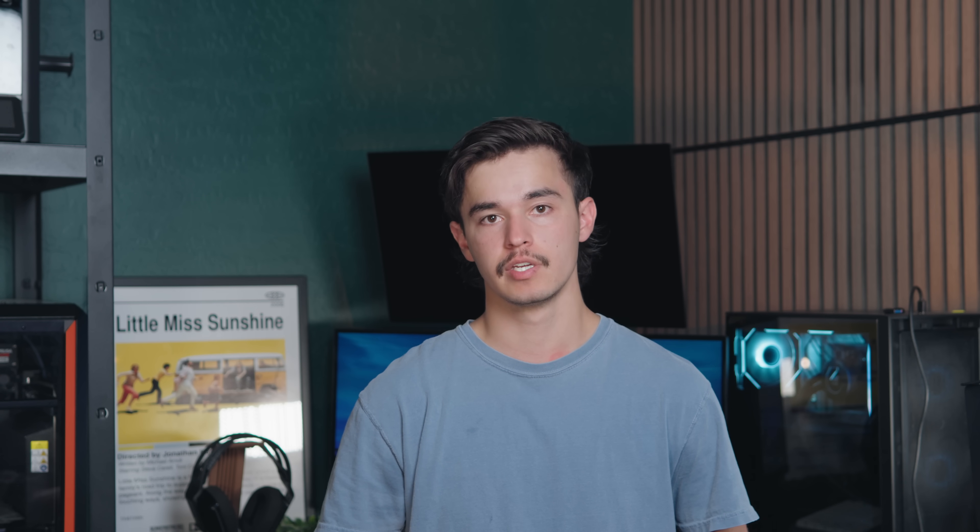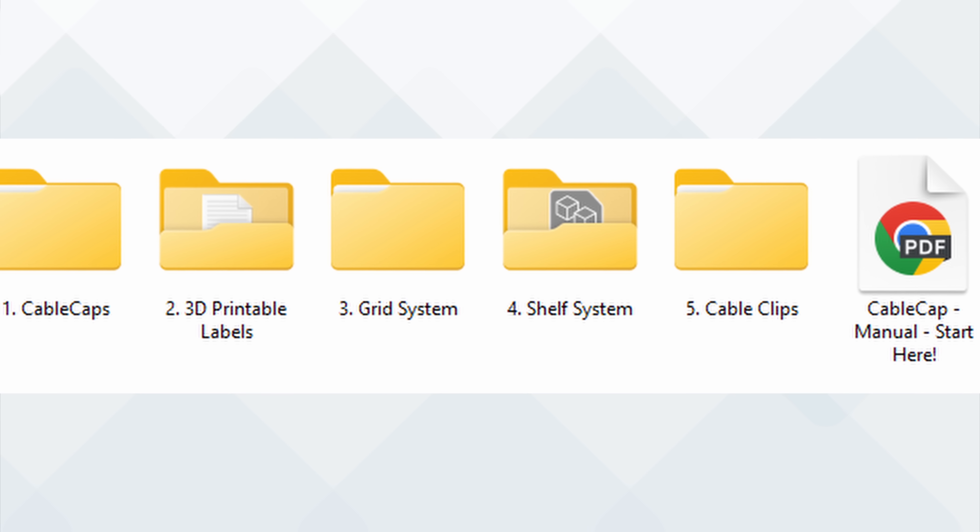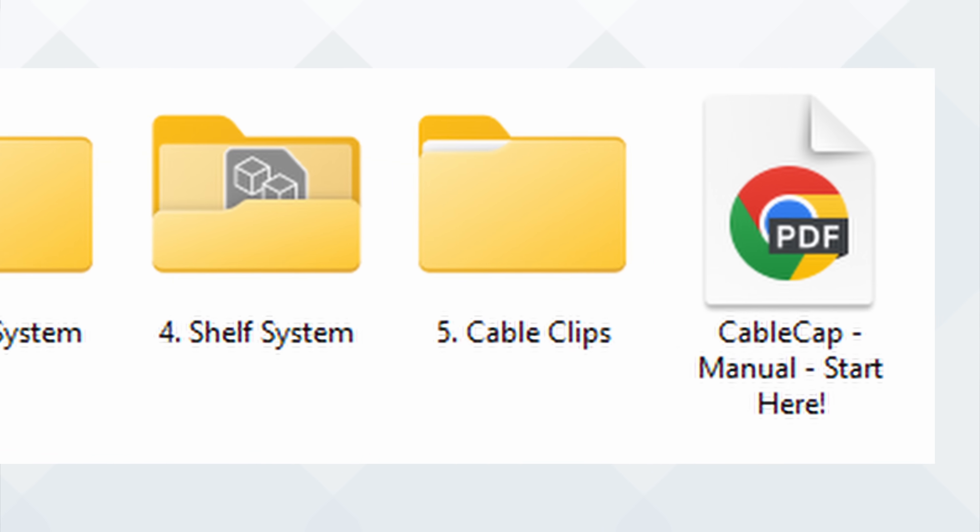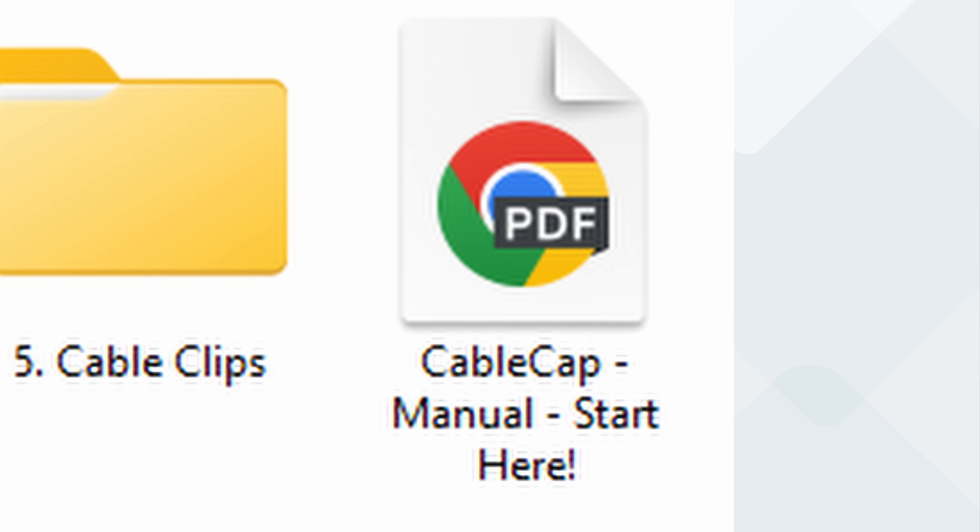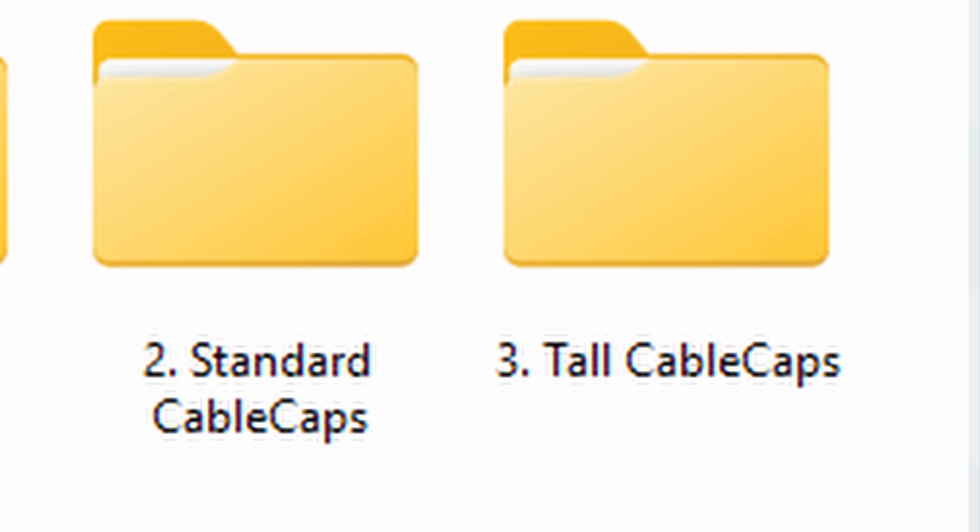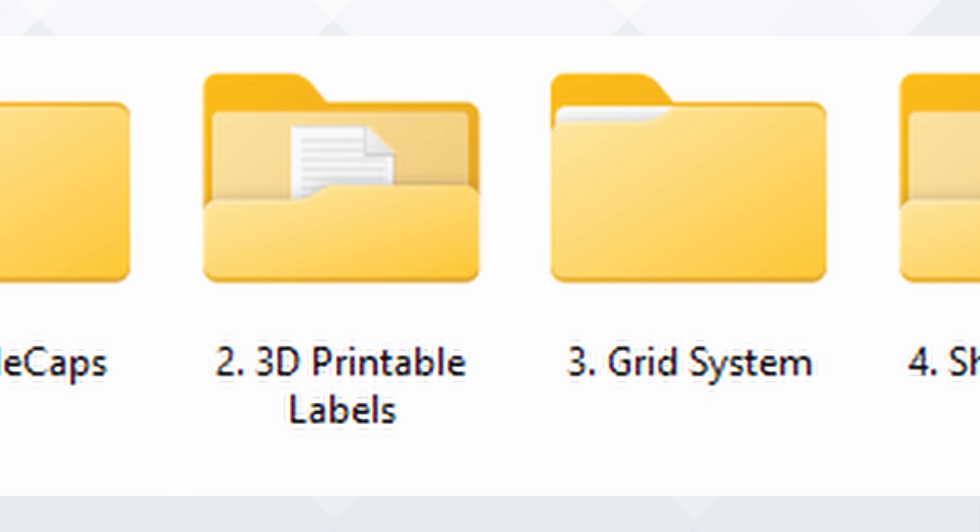CableCap is an STL pack that you receive when you back this project on Kickstarter. You receive a download with a folder that has everything you need to start your own CableCap storage system, including an extremely detailed manual, which tells you everything that you need, what order to go in, what sizes are for what cords, and any other things you might need to know. The folders are extremely organized, which makes it really easy to find what you're looking for, including a CableCap folder, 3D print labels folder, grid system folder, shelf system folder, and a cable clips folder.